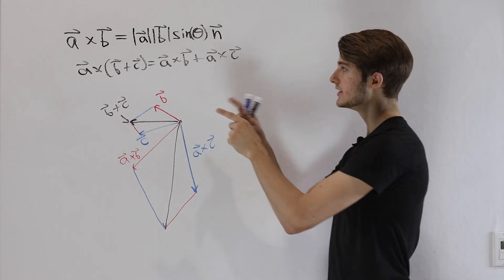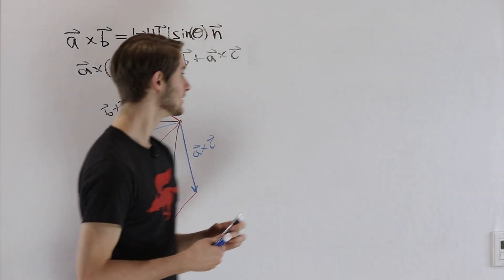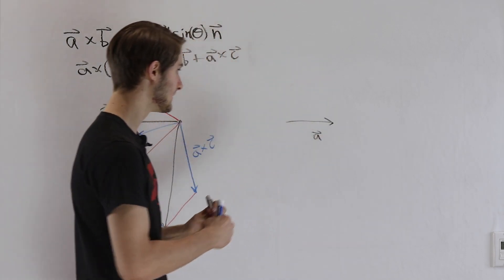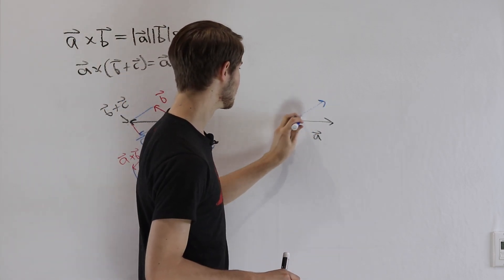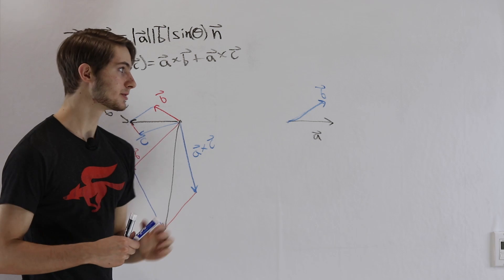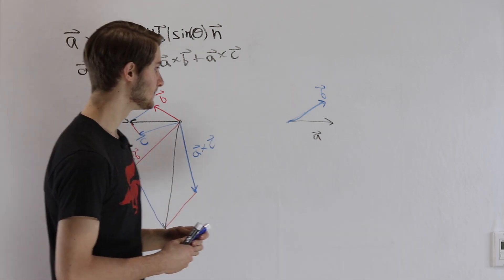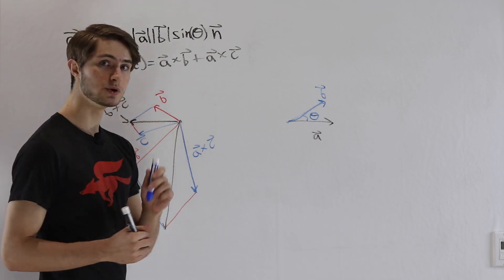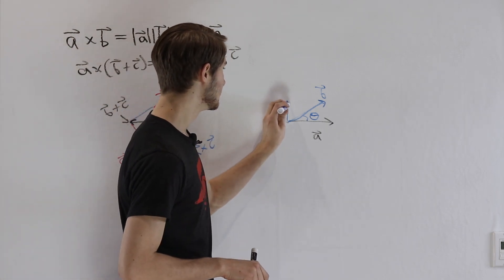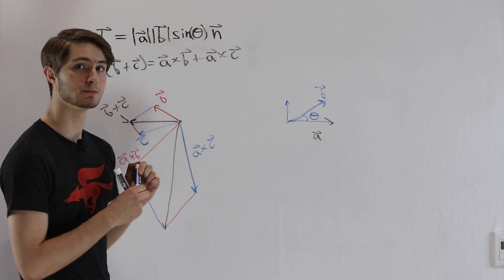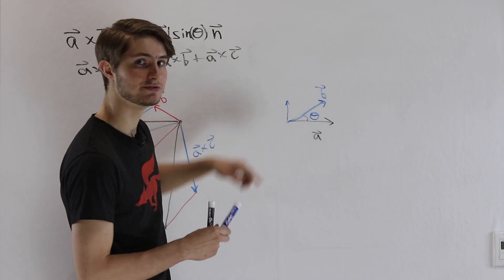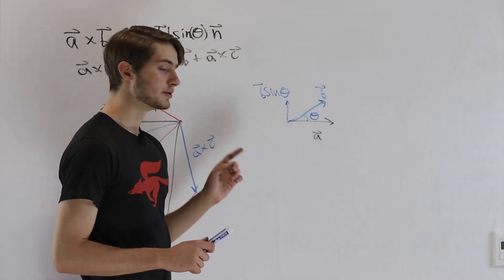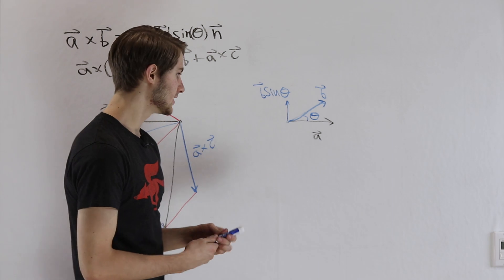But does this still work when B and C are not orthogonal to A? Let's say we have A looking like this and B pointing in this direction. What would be the cross product in this case? One thing we can do is think about the angle theta between vectors A and B. What would happen if we took only the component of B that is perpendicular to A — the orthogonal component? The length of this vector would be B times sine of theta.